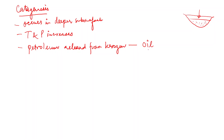In catagenesis, first oil is released and then gas is released. After the kerogen gives rise to petroleum, the hydrogen to carbon ratio declines. In catagenesis, the hydrogen to carbon ratio declines, while the oxygen to carbon ratio remains largely unaltered.